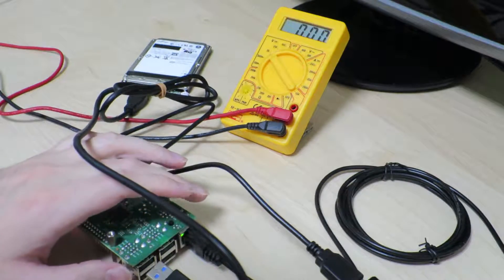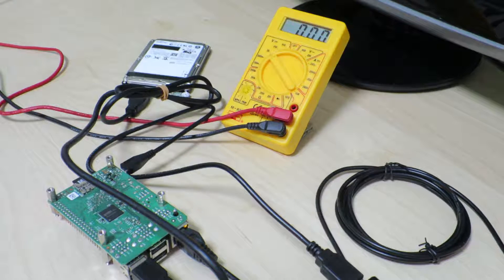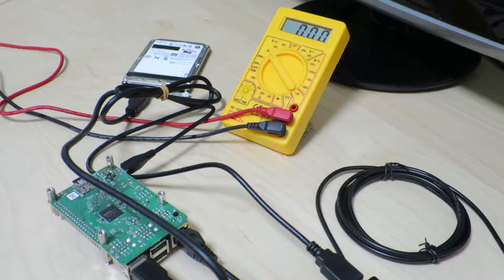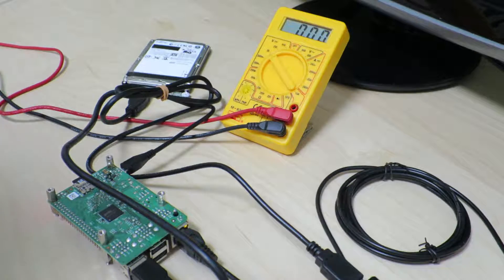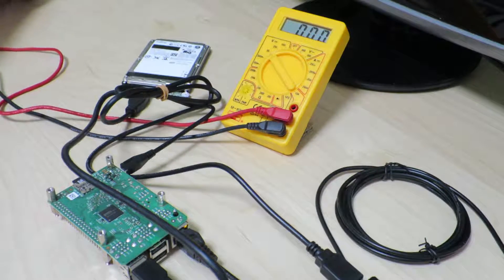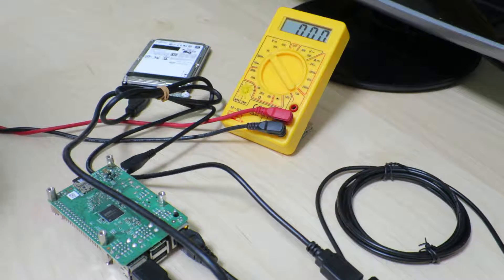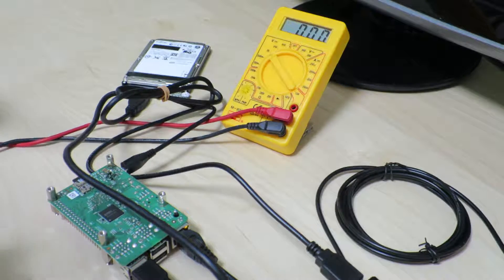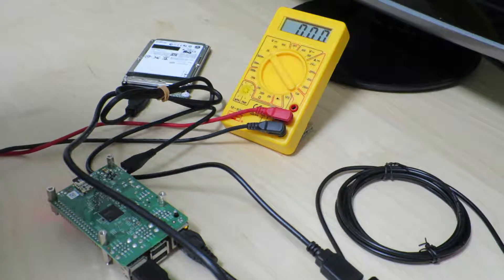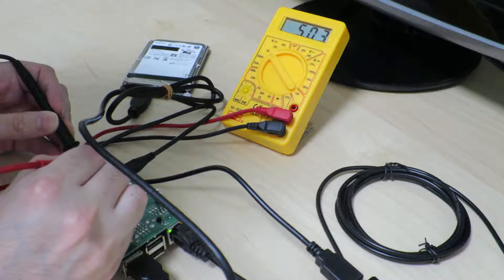All right, let's see if the hard drive will start up. Oh yeah, I hear the hard drive spinning up. All right, let's see if the hard drive is recognized. Oh yeah, so the hard drive is recognized. All right, and at this point, let's check the voltage that the Raspberry Pi is actually getting right now. All right, this time around we get 5.03 volts. That's good.